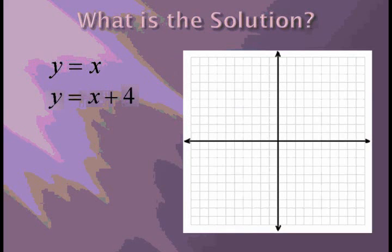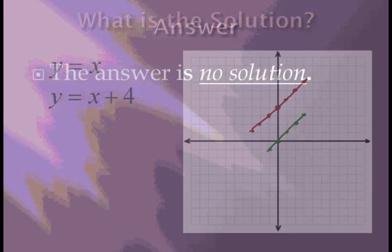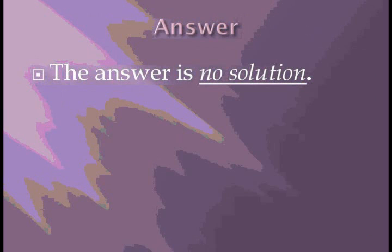Now, we are going to look over systems solved by graphing. The equations are y equals x and y equals x plus 4. If you graph these, you can see that they have the same slope but they have no solution. They could have different y-intercepts but the same slope and still have no solution.